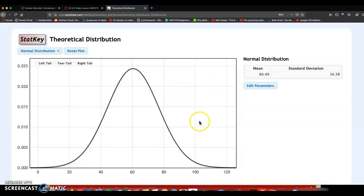Okay, I have the normal distribution. And if I click on two tail, for confidence intervals, you're always going to do a two tail test. And I want to make sure that middle says 95 percent.